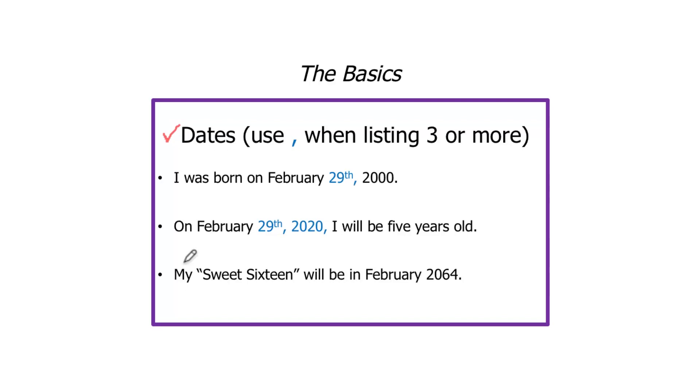The only reason we didn't have it up here was because the sentence ended. A lot of people don't know that. There is a comma after the last thing in your date description, which is often the year. My sweet sixteen will be in February 2064. We do not have a comma here because we only have two items, not three.